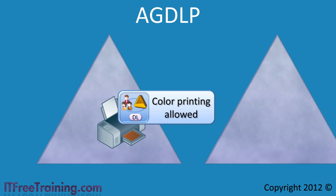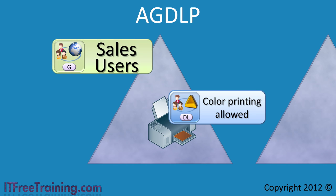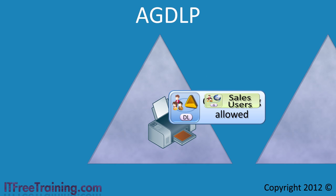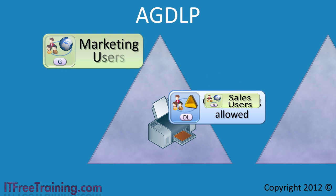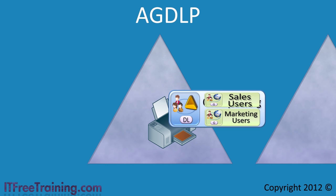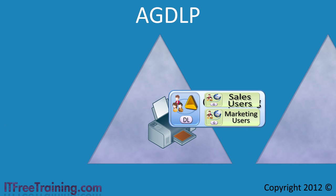The next group is the global group. A global group is created and put into the domain local group. In this case I will call the group 'sales users'. I could also create another group called 'marketing users' and put this group in the domain local group 'color printing allowed'. Remember that global groups only allow users, computers and other global groups to be put in them that come from the domain that the global group was created in.